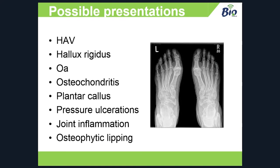Some of the more common conditions that can result include hallux valgus, hallux rigidus, osteoarthritis, osteochondritis, and even something like a patient coming back every six weeks to have pinch callus or plantar callus removed underneath the first, or medial hallux callus. With at-risk patients you might see pressure ulcers always breaking down underneath the first. You can also get joint inflammation because of the integrity of the joint not functioning as it should, and osteophytic lipping — where patients can feel a ridge on the top of their first MPJ — usually as a result of years of hallux limitus causing that bony build-up on the top surface.